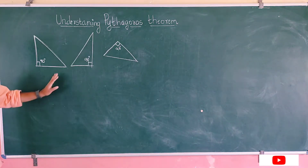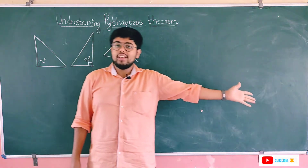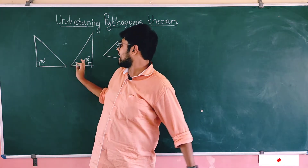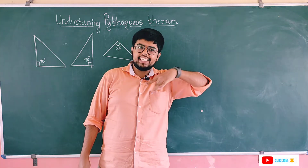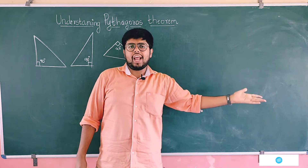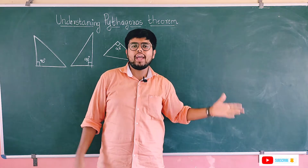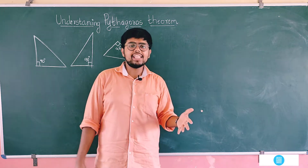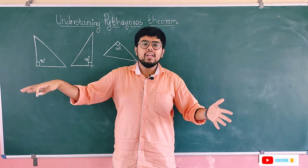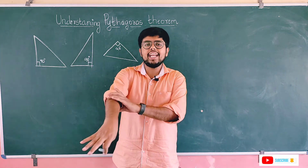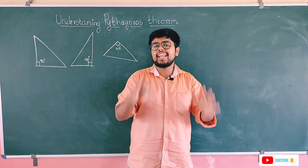A right angle triangle is a special type of triangle where one angle is already known — it is 90 degrees. In an equilateral triangle we know all angles are 60 degrees, but for many triangles we generally do not know the angles inside them. In a right angle triangle, one angle is already 90 degrees, so the perpendicular side must make 90 degrees.